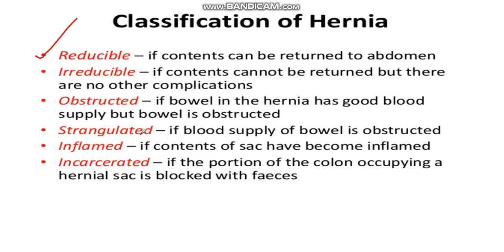Then we have strangulated hernia — if blood supply is compromised. When the bowel is obstructed but you have good blood supply, it is obstructed hernia. But when you have obstruction as well as compromised blood flow, that is called strangulated hernia. Then we have inflamed hernia — if the contents of the sac have become inflamed. And then we have incarcerated hernia — if the portion of the colon occupying a hernial sac is blocked with feces.